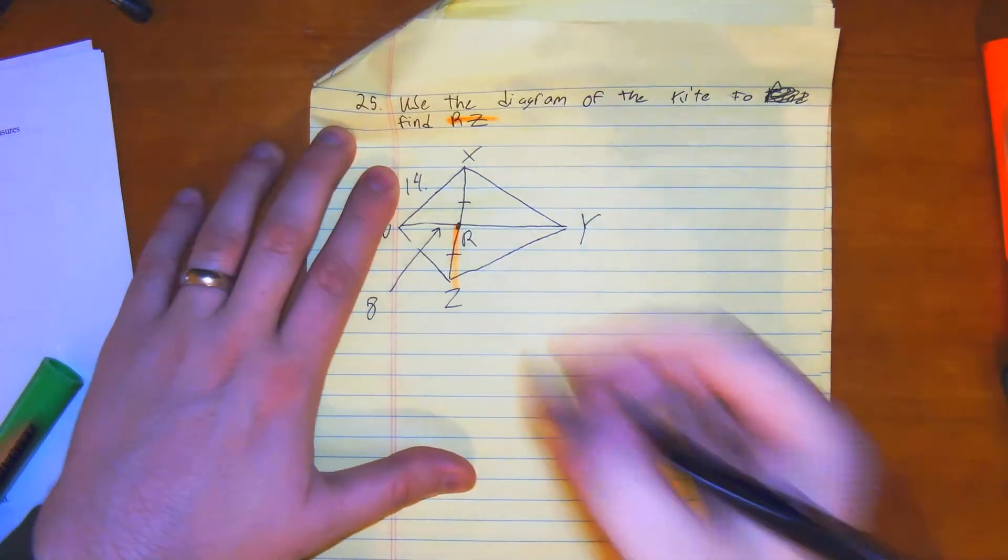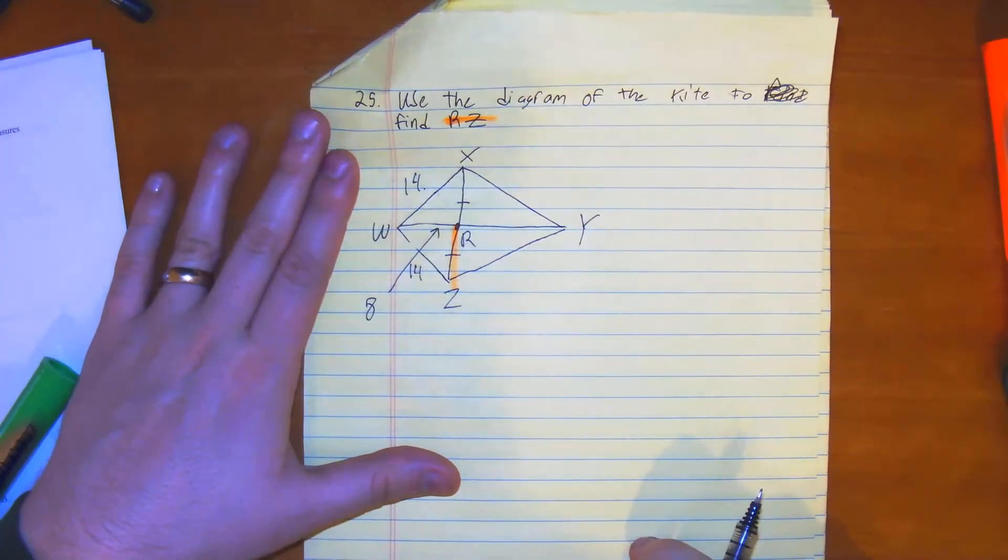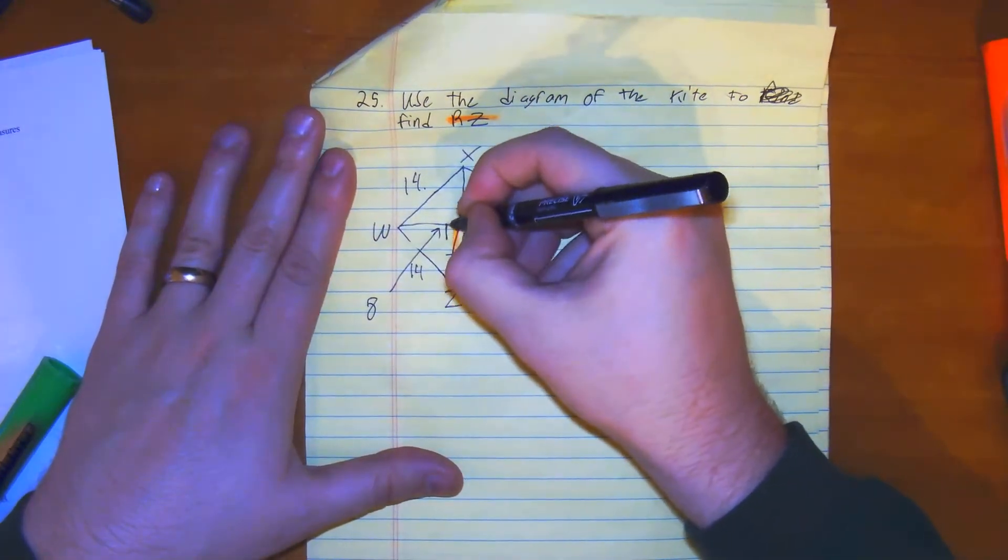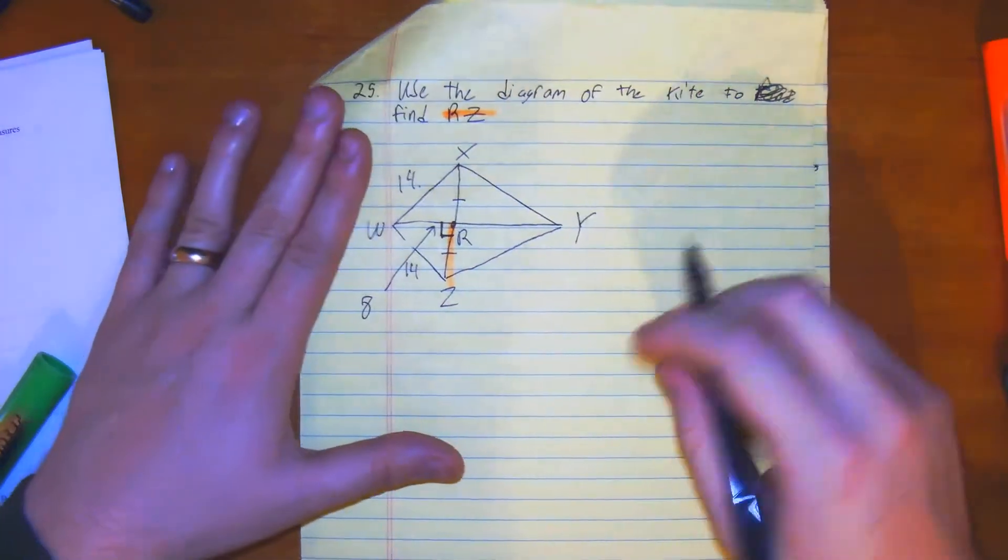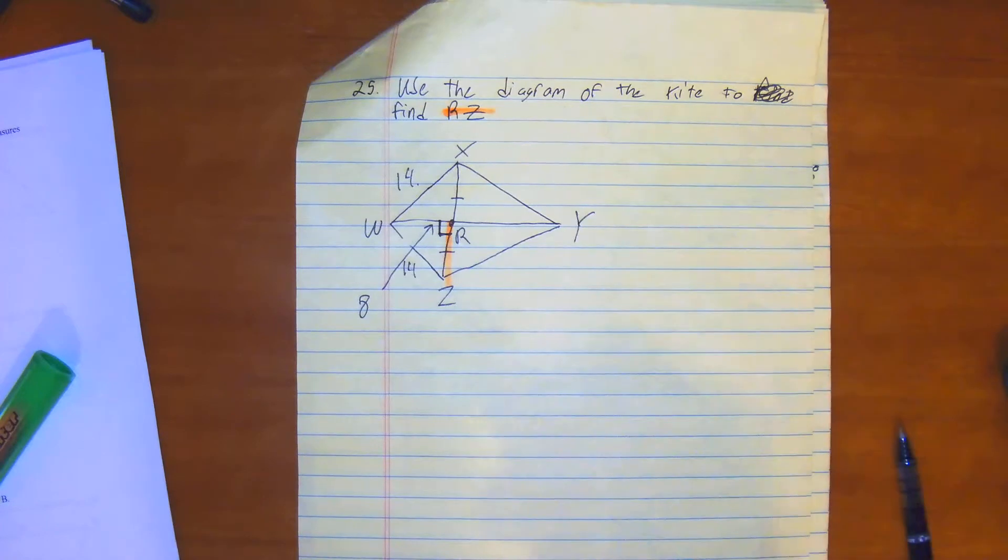So also we know that 14 will also be right here. So it really doesn't matter what we do here. And we know that these diagonals are perpendicular. So we are going to be focusing on creating the right triangle.